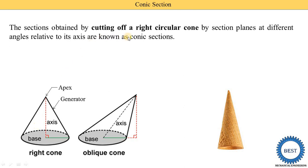The section obtained by cutting of a right circular cone by a section plane — by using the section plane, we cut the cone at different angles relative to its axis — is known as the conic section. This cone is cut by using the section plane, and we can cut at different angles with respect to its axis.